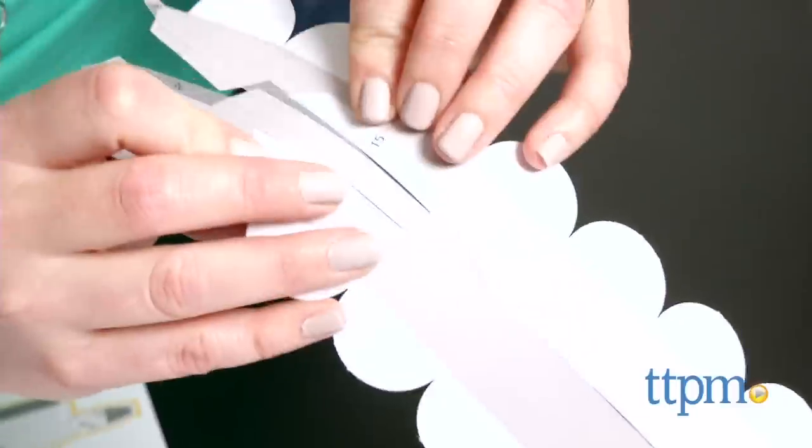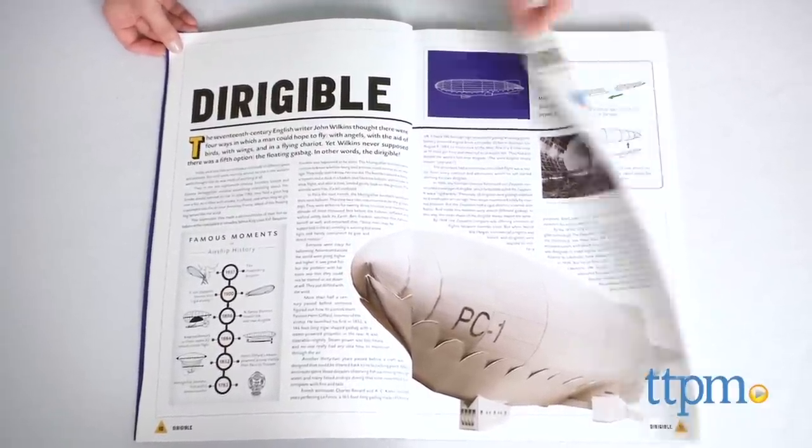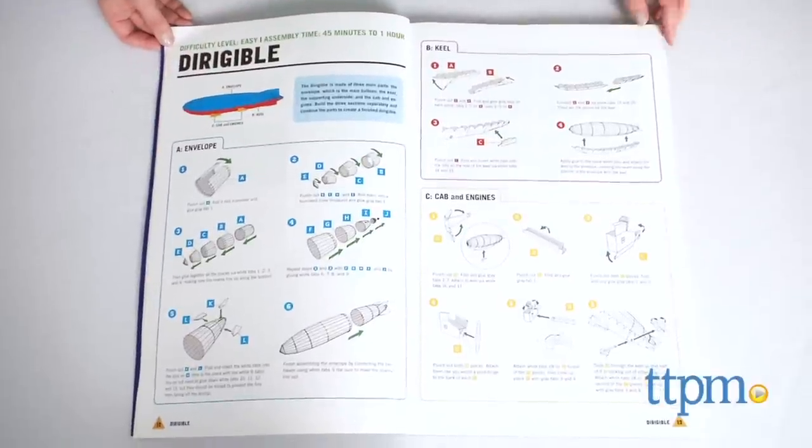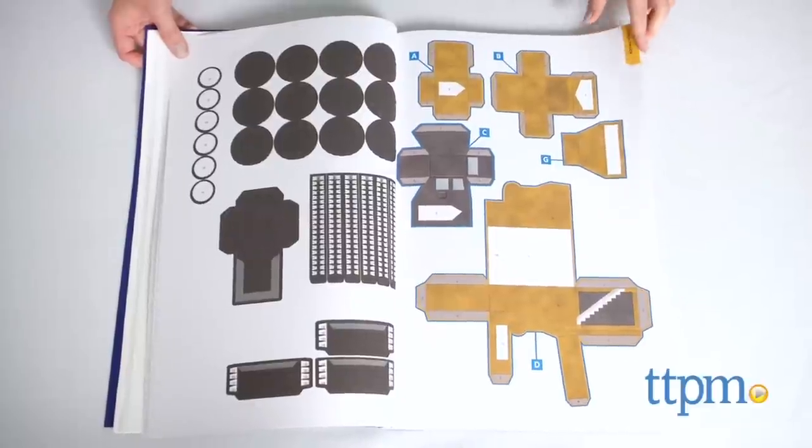The first part of the 128-page book provides information on the paper model's real-world counterparts and the instructions for building the models. The second part of the book includes tear-out pages with the punch-out model pieces.